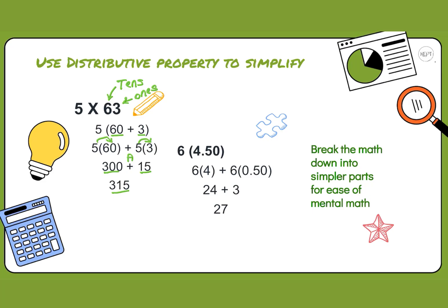Sometimes we have dollars and cents. Here's an example: 6 times four dollars and fifty cents, or 4.50. We can break this 4.50 into two separate parts.